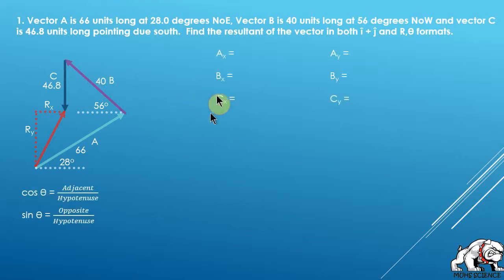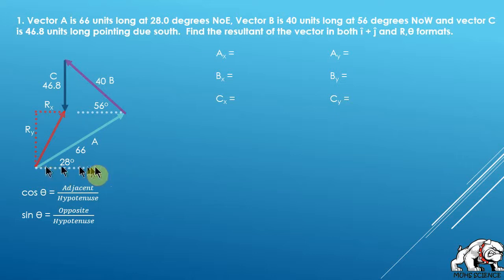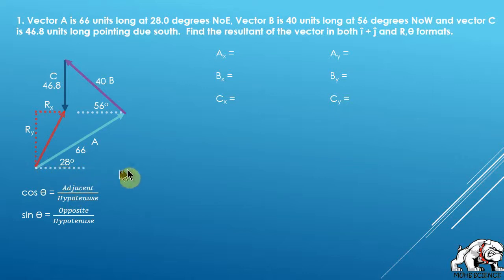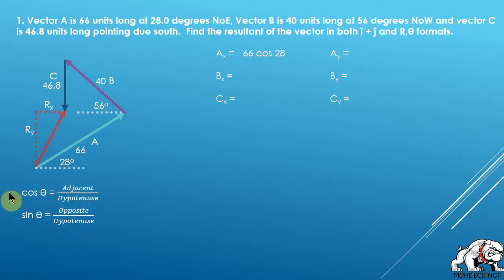For vector A in the x direction, that's the horizontal component of vector A. We use cosine: cosine of an angle equals the adjacent side divided by the hypotenuse. I want to solve for the adjacent side — I know the hypotenuse is 66 units and theta is 28 degrees. So Ax equals the hypotenuse times cosine of 28: 66 × cos(28). It's going to the right, so it's positive.